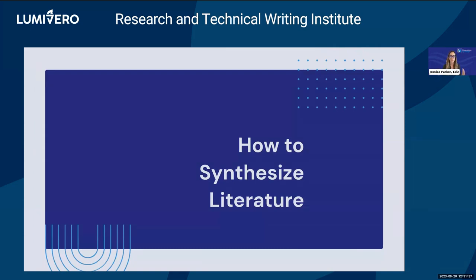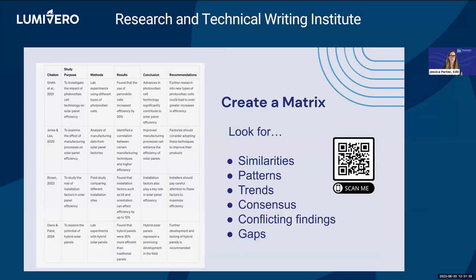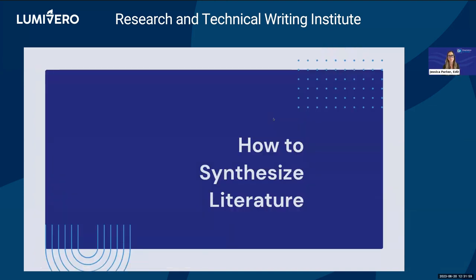Let's imagine you've gone through the process of creating this literature matrix — it's probably going to look much larger than this example. If you imagine you've gone through the process of analyzing the literature within that matrix, you're now moving on to this next step of synthesis. Synthesis is — these are all very interrelated. You have to synthesize to write claims, but you also have to be familiar with the literature overall in order to synthesize. So it's a very iterative cycle, not a linear process.